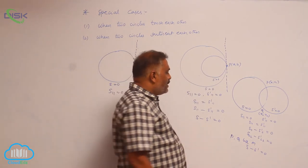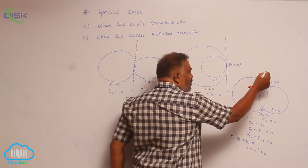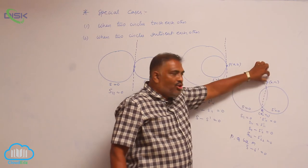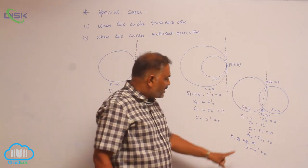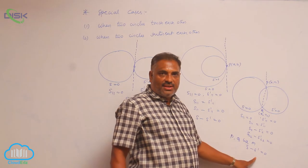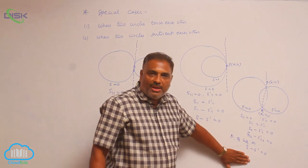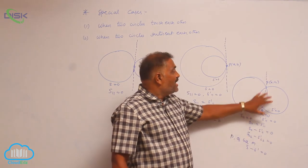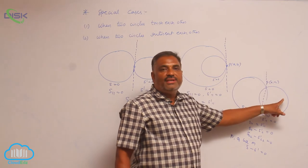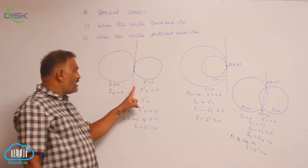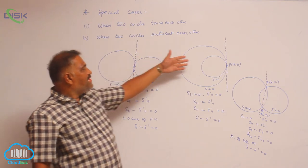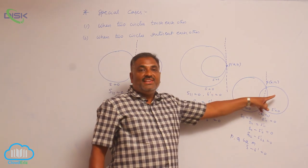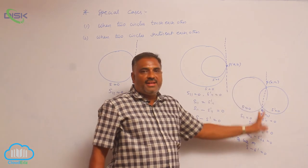So S − S' = 0 is no doubt a straight line passing through P and Q. For intersecting circles, P and Q form the common chord, which is nothing but S − S' = 0. We know this is the radical axis. So S − S' = 0 is the radical axis, which is the common chord of the two intersecting circles. In summary: when circles touch each other externally or internally, the common tangent is the radical axis; when two circles intersect each other, the common chord is the radical axis.